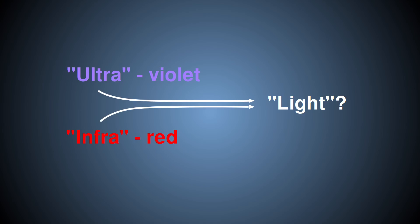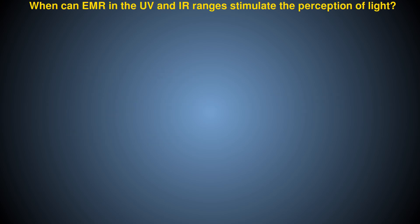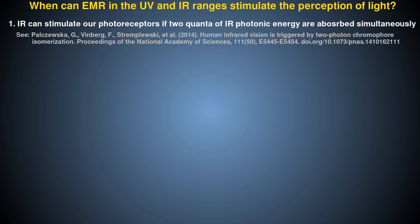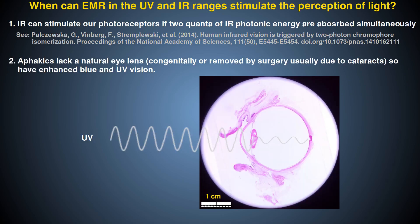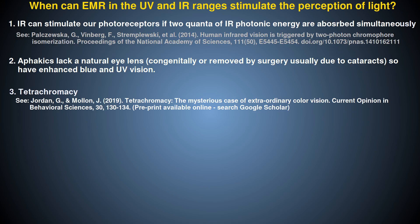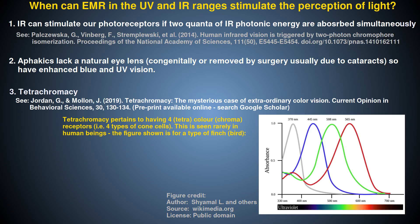Some of you may be wondering why people speak of infrared light or ultraviolet light if by definition these wavelengths are invisible to us. While we can't see in these ranges under usual circumstances, it is possible in some situations. Low-energy infrared photons can be detected by two-photon excitation if the source is intense enough — simultaneous absorption of two infrared photons provides energy similar to a single visible-range photon to stimulate the photoreceptors. Furthermore, the eye lens absorbs UV, so people with aphakia can see further into the UV range. Some rare people have a genetic alteration allowing them to see into the ultraviolet, such as those with a fourth type of cone cell sensitive in that region — a condition called tetrachromacy.